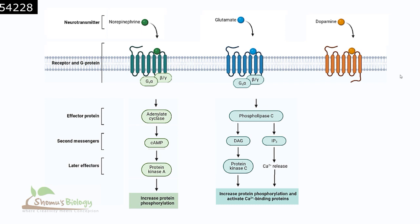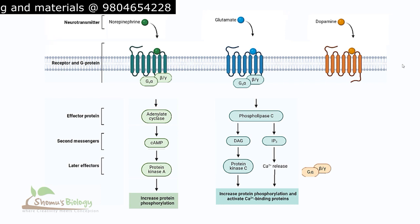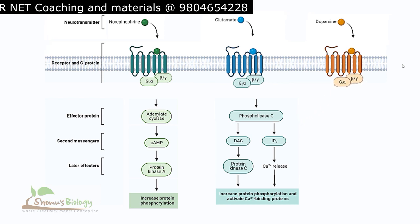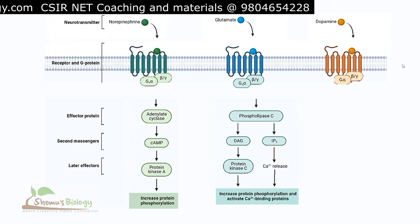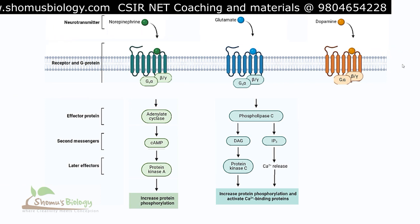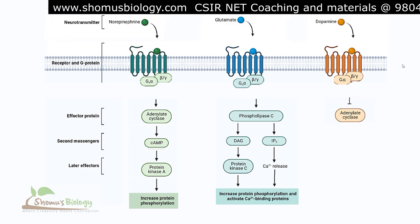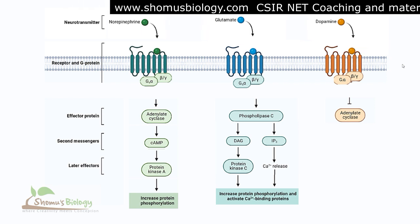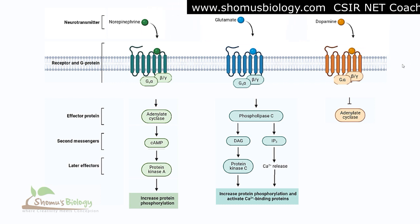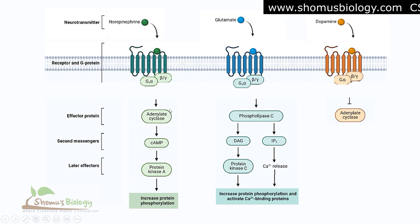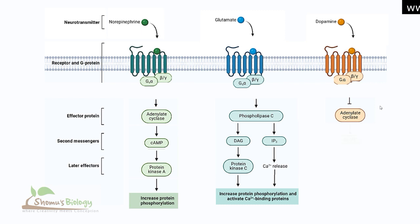For the dopamine-associated GPCR pathway, when dopamine binds to its GPCR receptor, a different type of G protein — Gi alpha-beta-gamma — associates with the cytosolic site. The alpha unit dissociates from beta-gamma, but instead of activating a downstream target, it initiates an inhibitory signal: it inhibits adenylate cyclase. This is opposite to norepinephrine, which activates adenylate cyclase. Because adenylate cyclase is inhibited, cyclic AMP cannot be generated, protein kinase A is not activated, and protein phosphorylation is suppressed.